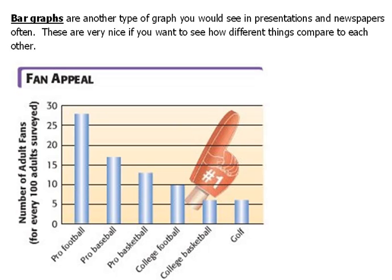The next type of graph we want to look at is a bar graph. A bar graph is called a bar graph because we have a series of bars. It is very nice to use a bar graph when you want to compare things, because very quickly and easily we can see that there's more of one particular item than there is of another. We can look at the comparison.